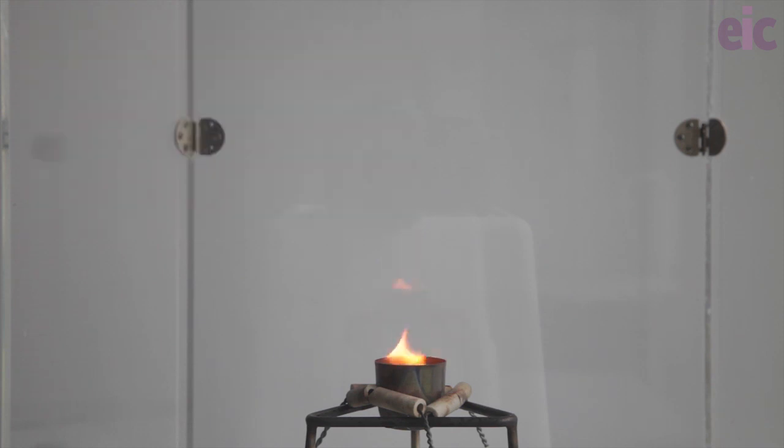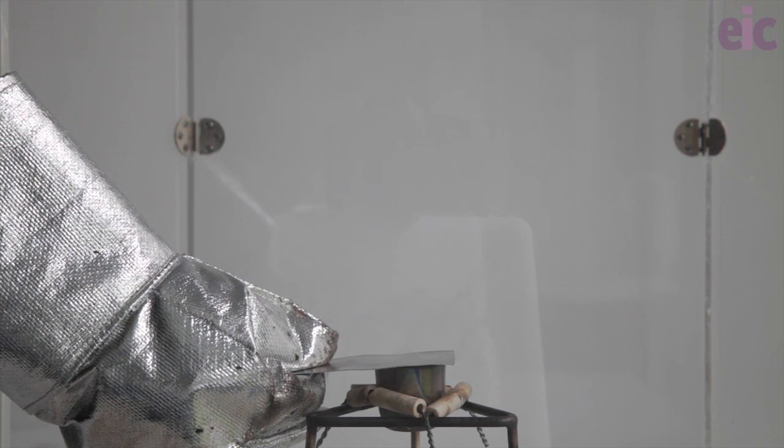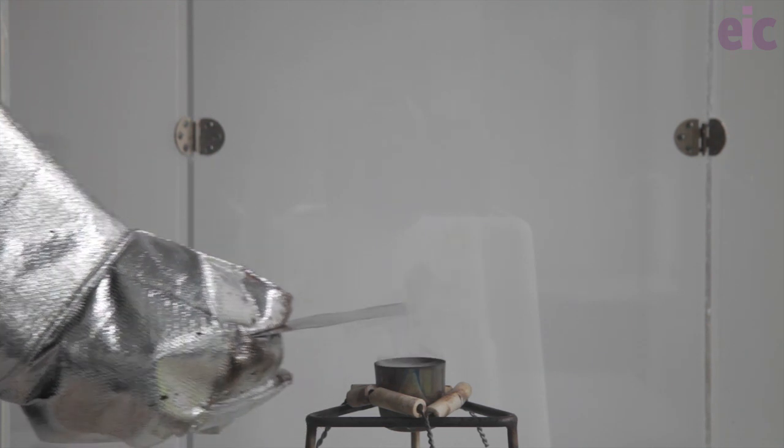Turn off the Bunsen at the gas tap. At this point, you can put on heat-resistant gloves and show that the fire can simply be extinguished by placing a piece of aluminium over the crucible to smother the flames.